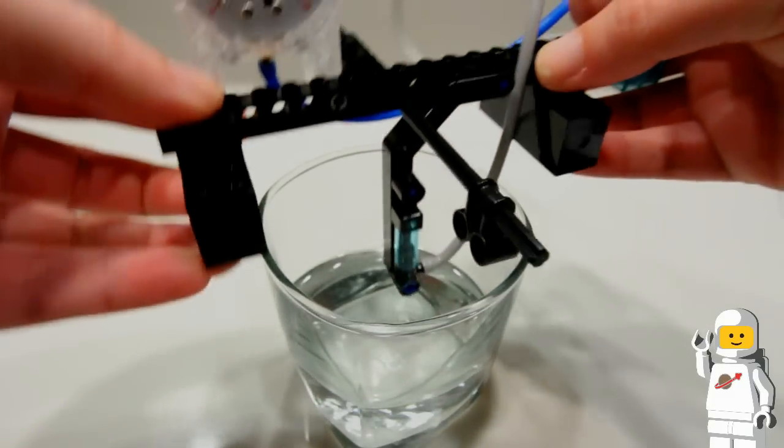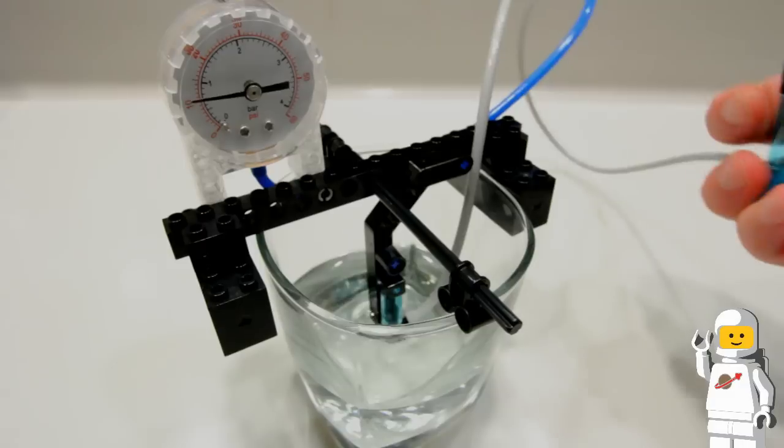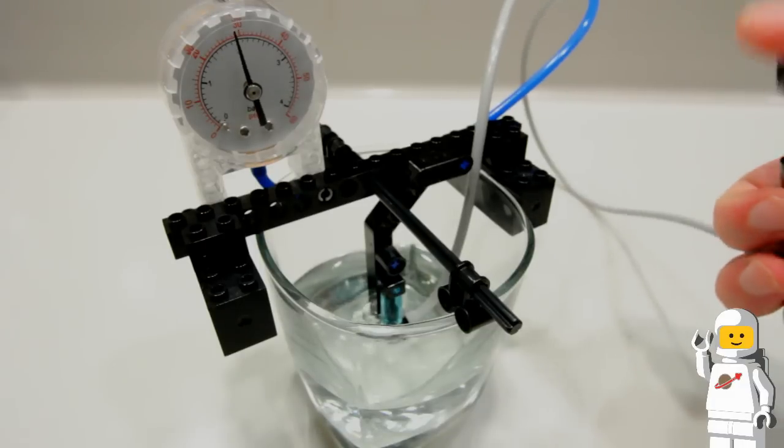Another test that I did was to submerge the pump in water to see if any air bubbles appear, which would indicate a leak. I didn't want to introduce any water into the system, so I only partially submerged the pump into the water.